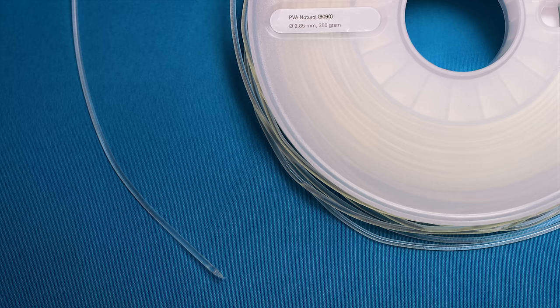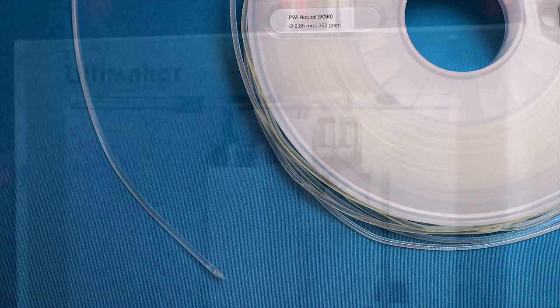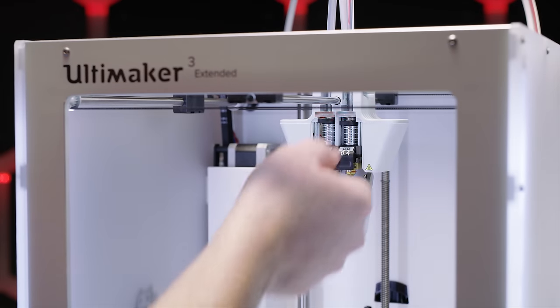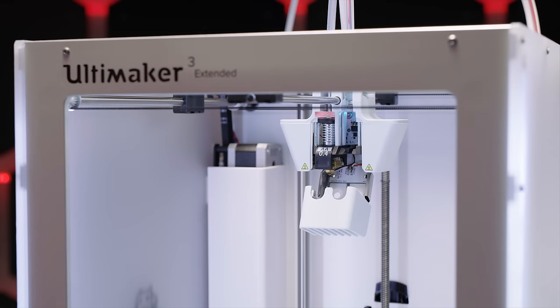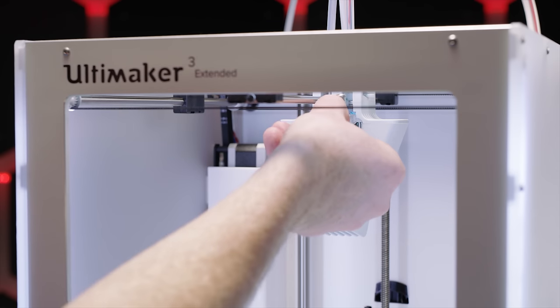Then there's PVA. Ultimaker PVA is a dissolvable filament. Basically, you can use Printcore AA to extrude normal PLA filament plastic stuff. What we've been using for a while now.